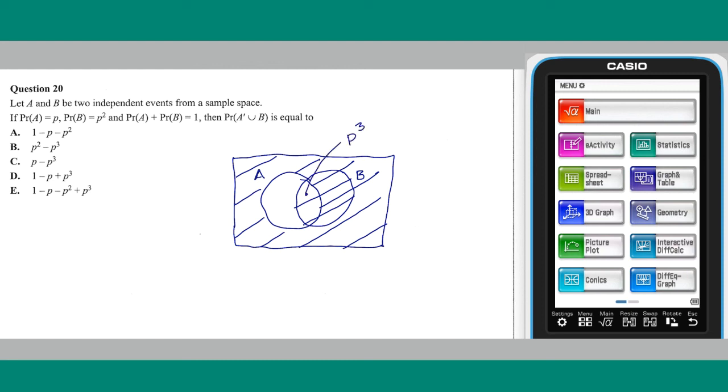As the probability of A is P, the probability of the unshaded region is P minus P cubed. This means that the shaded region has probability 1 minus P minus P cubed. This can be simplified to 1 minus P plus P cubed, which is answer D.